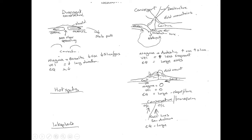We then have convergent collision plate margins, where two continental plates bash together — such as the Indian subcontinent and the Eurasian plate — forming fold mountains such as the Himalayas or the Alps. Here there tends to be very little magma because the two plates are pushing upward rather than being subducted, so there is very small chance of volcanic eruptions. However, the earthquakes tend to be very large, very powerful, and very difficult to predict.